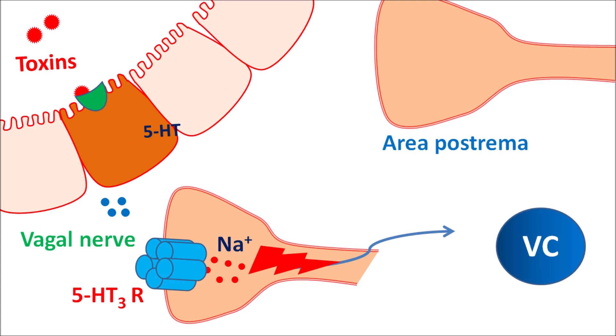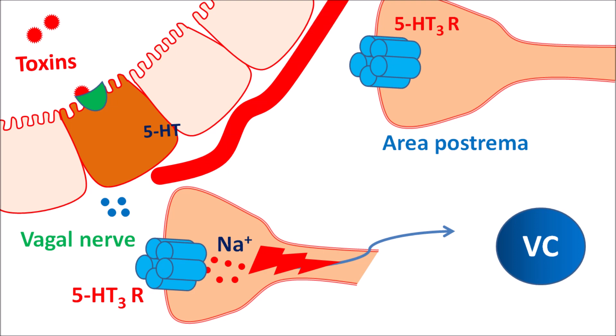Within the CTZ, the area postrema is also important for inducing nausea and vomiting. It is equipped with 5-HT3 receptors, and 5-HT released at the enterochromaffin cells can reach the CTZ through systemic circulation. There, 5-HT acts on 5-HT3 receptors, producing excitation that is transmitted to the vomiting center.